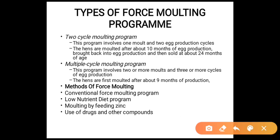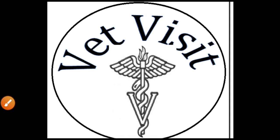Force molting: under force molting, a layer flock is induced to shed and replace its feathers at a time selected by the flock manager. Two-cycle molting program: involves one molt and two egg production cycles; hens are molted after about 10 months of production, brought back into production, and sold at about 24 months. Multiple-cycle molting program: involves two or more molts and three or more production cycles; hens are first molted after about 9 months. Methods of force molting include: conventional force molting program, low nutrient diet program, molting by feeding zinc, and use of drugs and other compounds.